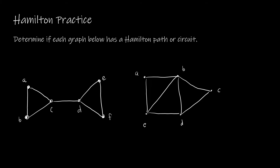Your textbook has two theorems — Dirac's theorem and Ore's theorem — that give some guidance as to when a Hamiltonian circuit exists. Dirac's theorem says that if you have a simple graph with n vertices where n ≥ 3, and every vertex has degree at least n/2, then there is a Hamilton circuit. For instance, with six vertices, if every vertex has degree at least 3, you're guaranteed a Hamilton circuit. However, it doesn't give guidance for vertices with smaller degree.